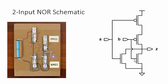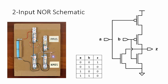This is the truth table for the logic. When the inputs A and B are both zeros, or both ones, the NOR circuit works just like the inverter.